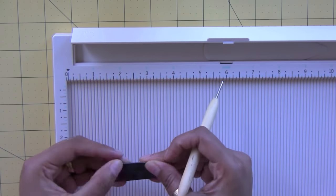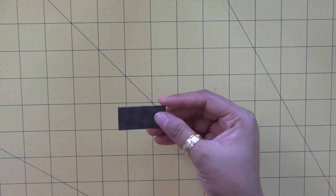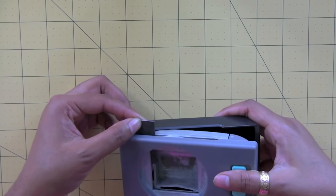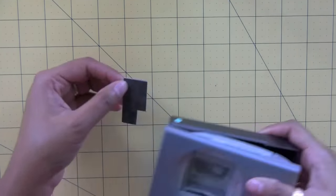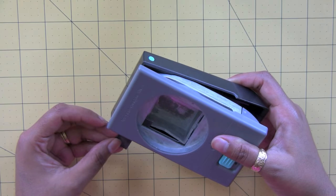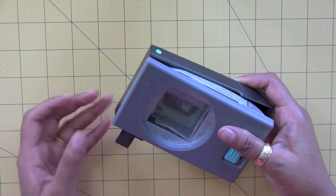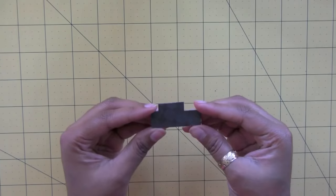And then I'm going to fold it over and take my square punch again and just square off both sides of it. Super easy. See? You're all done. Thanks so much for watching.